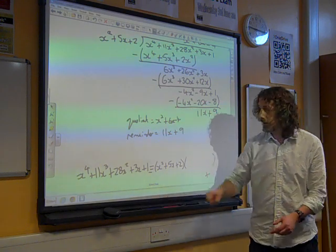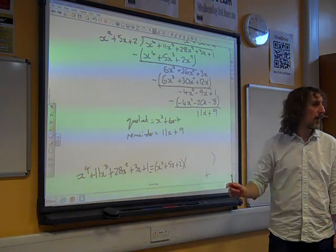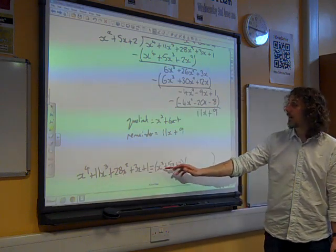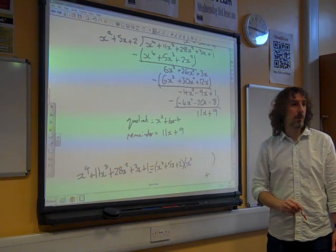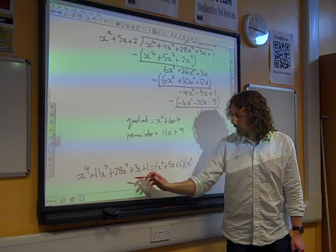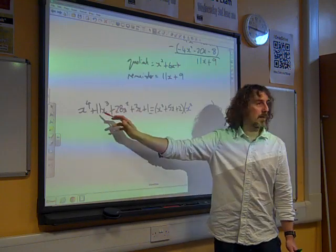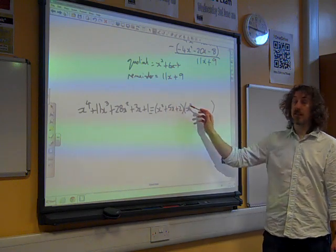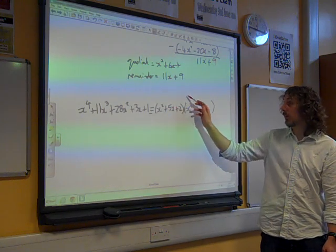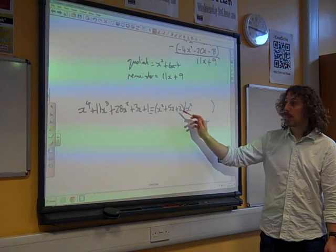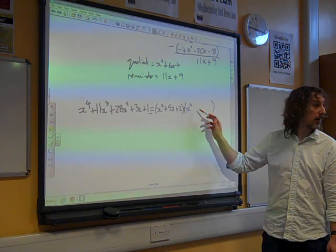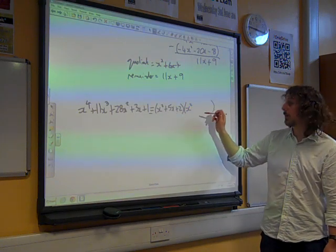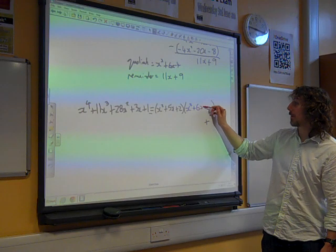And if we work through, imagine yourself multiplying out the brackets, the x to the 4 would come from an x squared times an x squared. So that must be x squared. The 11x cubed, that bit there, would come from doing 5x times the x squared. So we've already got 5x cubed, plus x squared times whatever goes there. So 5x times the x, because it's x cubed, we need another 6x cubed to make up the number. So that must be a plus 6x.